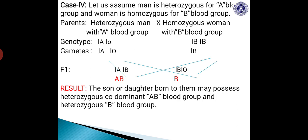We have already discussed about back cross and test cross — I hope you remember that. In case 4, the man has IAI0 and the woman has IBIB. The man produces two types of gametes — IA and I0 — because he is heterozygous, whereas the woman produces only one type of gamete — IB — because she is homozygous. When there is random fusion of such gametes, the F1 progeny will have either AB blood group or B blood group. The son or daughter born to them may possess heterozygous co-dominant AB blood group and heterozygous B blood group. This is the first important problem with reference to the inheritance pattern in blood group inheritance.